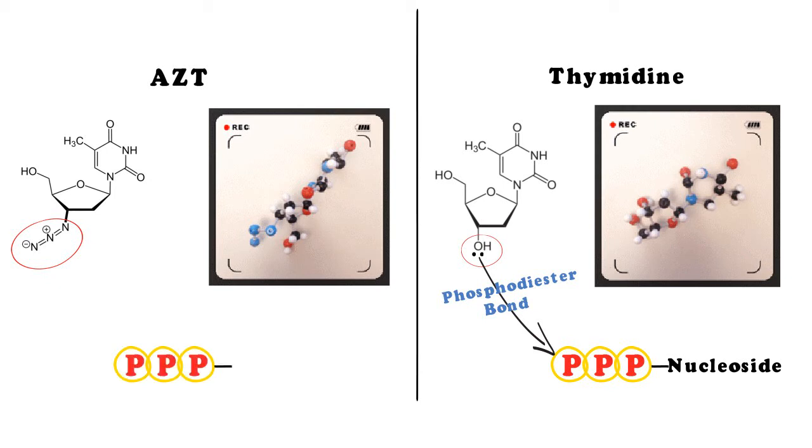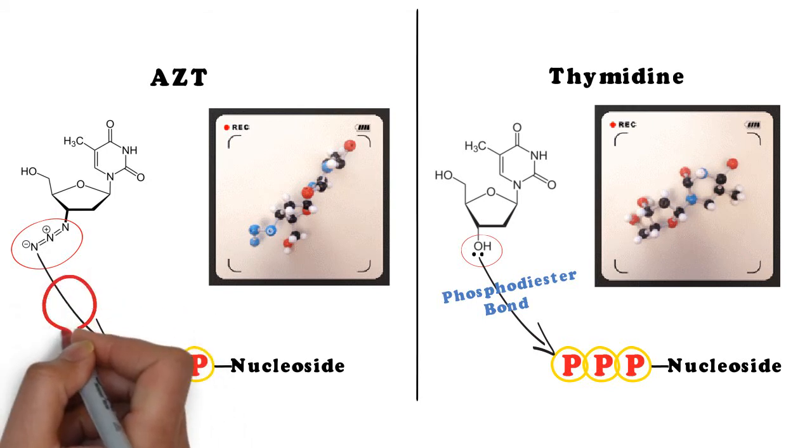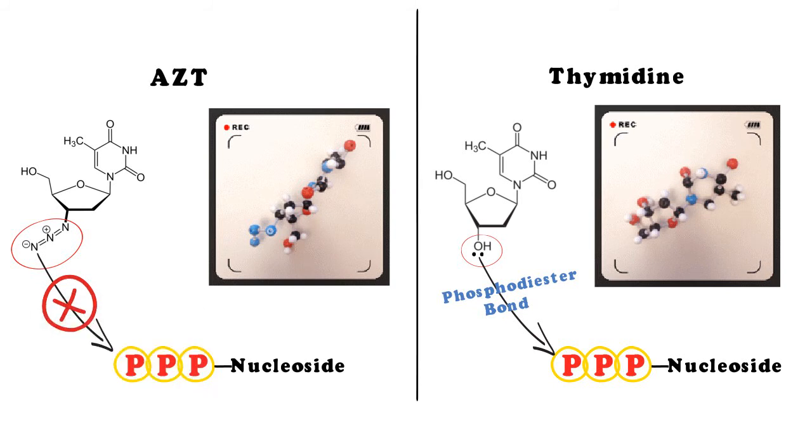Now, because AZT is so structurally similar to thymidine, it still gets incorporated into the strand. However, because there's the azido group instead of the 3' hydroxyl, once the AZT is part of the strand, no nucleophilic attack can occur and this leads to chain termination. No more nucleotides can be added to the chain, which eventually destroys the replication cycle.